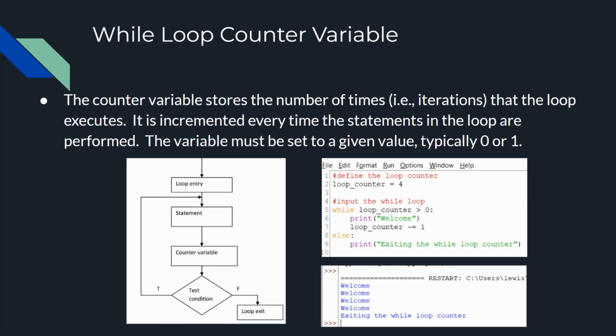The number of times that the loop is performed is normally a finite number. A well-defined loop will eventually terminate, unless it has been specified as a non-terminating loop. The condition is also known as the loop condition, and it determines when the loop terminates. A non-terminating loop is defined in special cases and will repeat the actions forever. Only in some very special cases, the programmer can decide to write an infinite loop, which will repeat the statements in the loop forever.